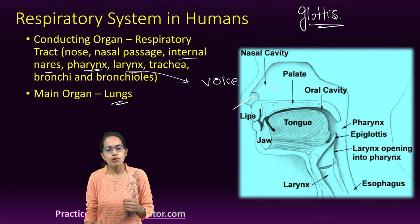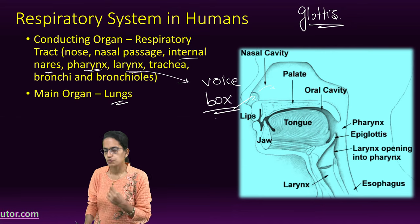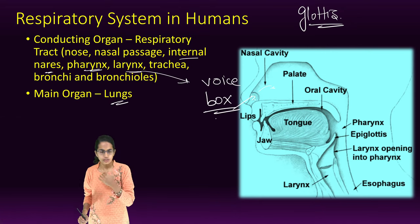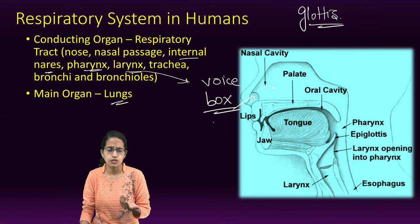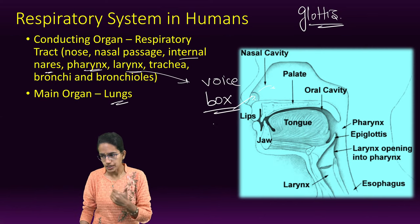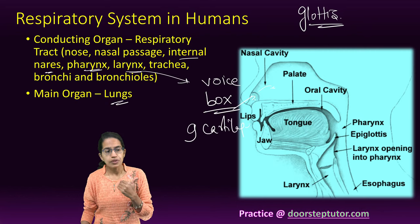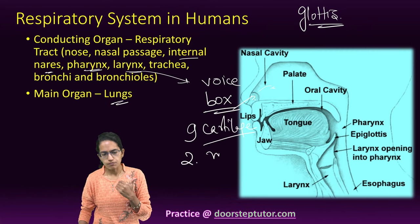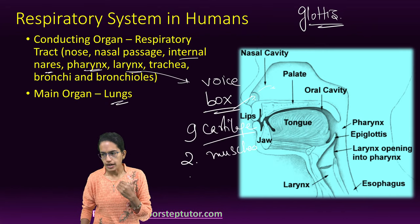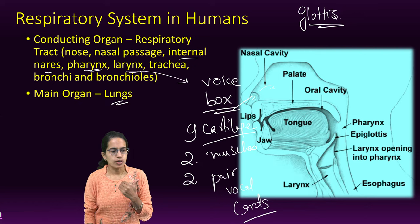The next structure is the larynx, also called the voice box. It is responsible for sound production and is located at the interior of the trachea. The larynx comprises nine cartilages, two sets of muscles, two pairs of muscles, and two pairs of vocal cords.